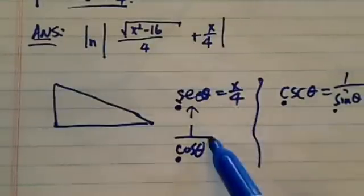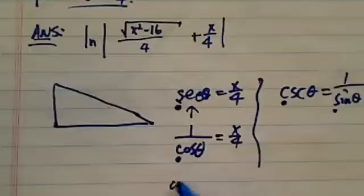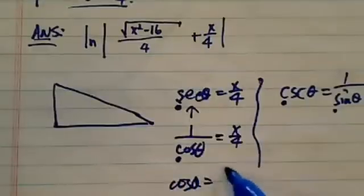So here, 1 over cosine equals x over 4. That gives you a clue that cosine theta is really equal to 4 over x.